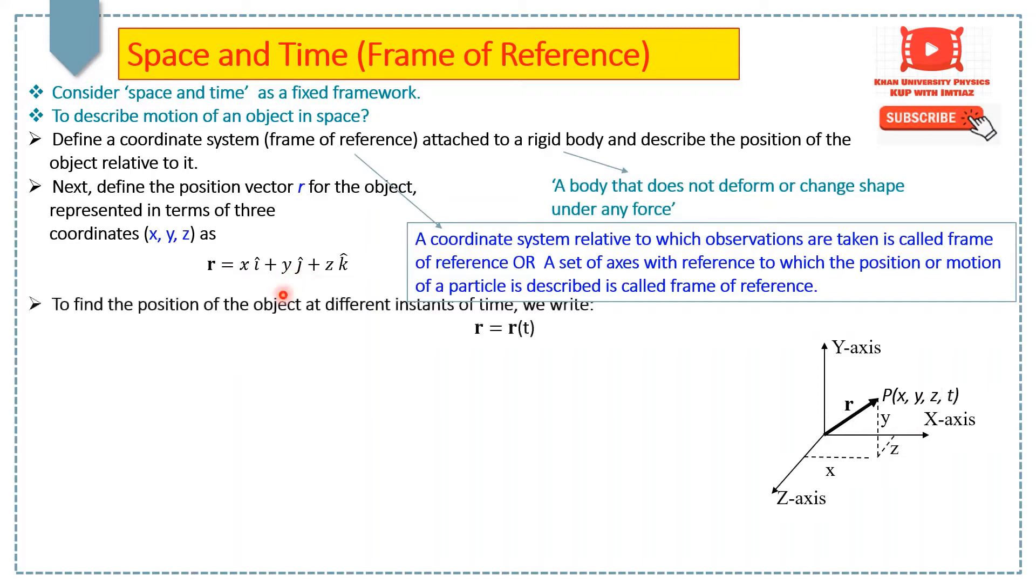Next, to find the position of the object at different time, we write the position vector r as a function of time t. This means that at a particular instant of time, the observer at origin may have taken a clock to measure the time of any event.